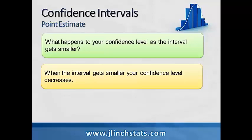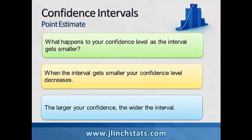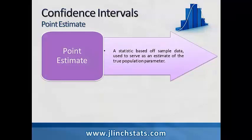The smaller the interval, the less confidence we'll have, because a more precise answer will likely be very close to what our idea is of the true parameter value. The larger your confidence, the wider the interval. So if we want larger confidence in estimating population parameter values using statistics from sample data, we want our confidence intervals to be fairly wide. A point estimate is a statistic based on sample data used to serve as an estimate of the true population parameter.